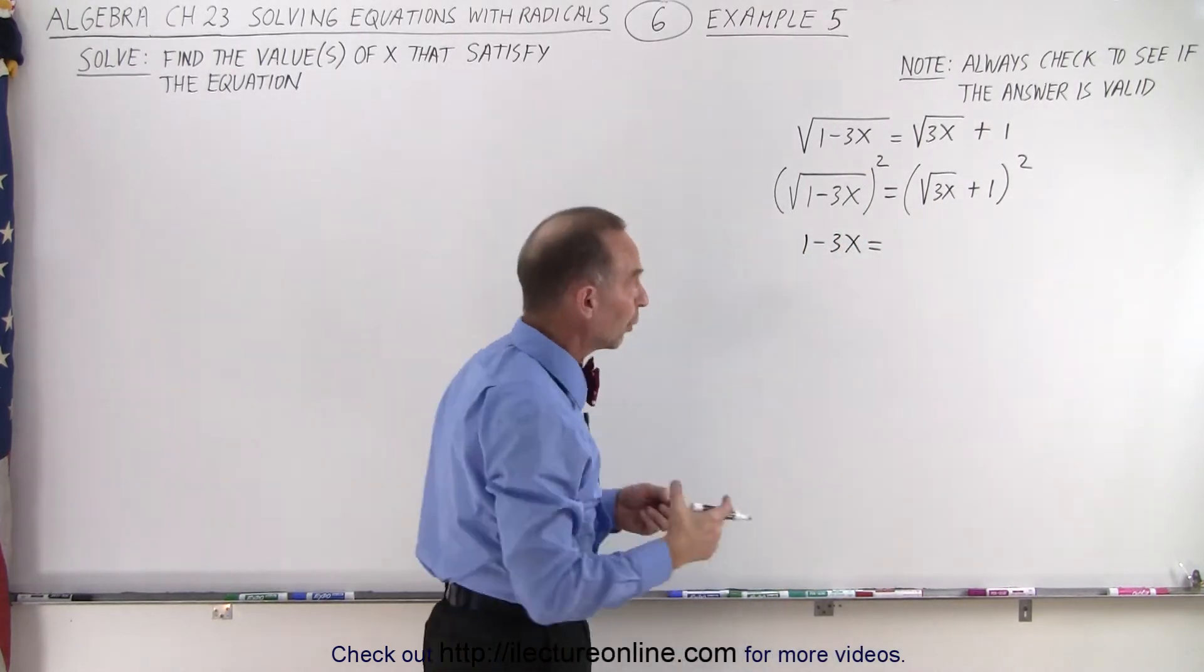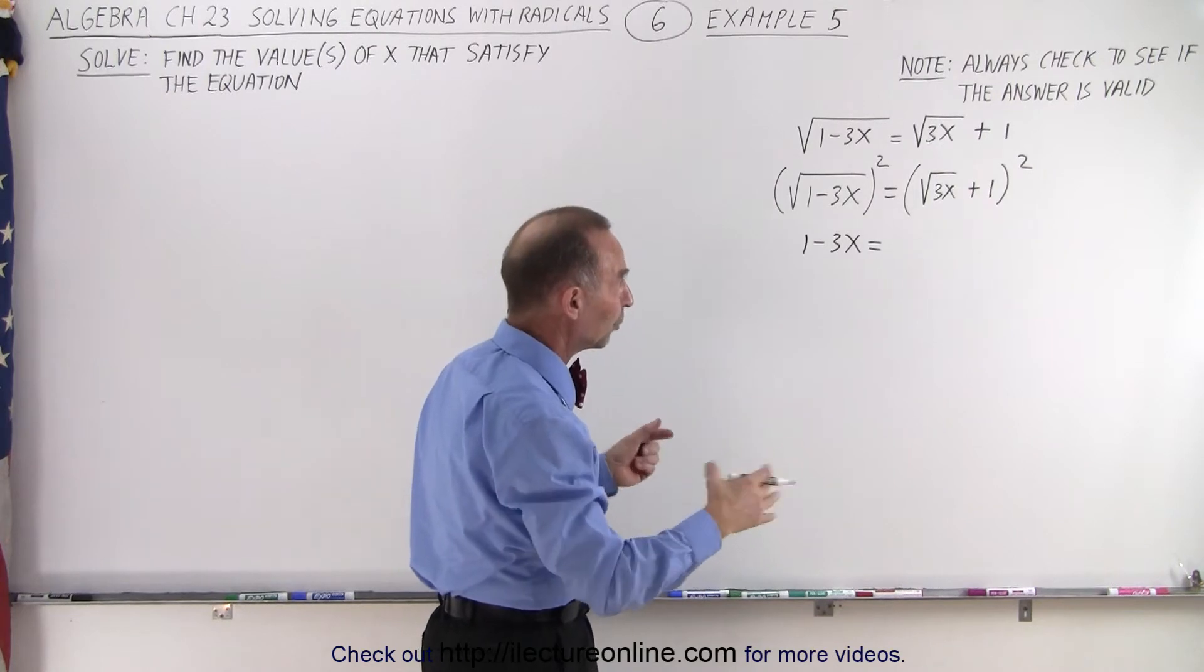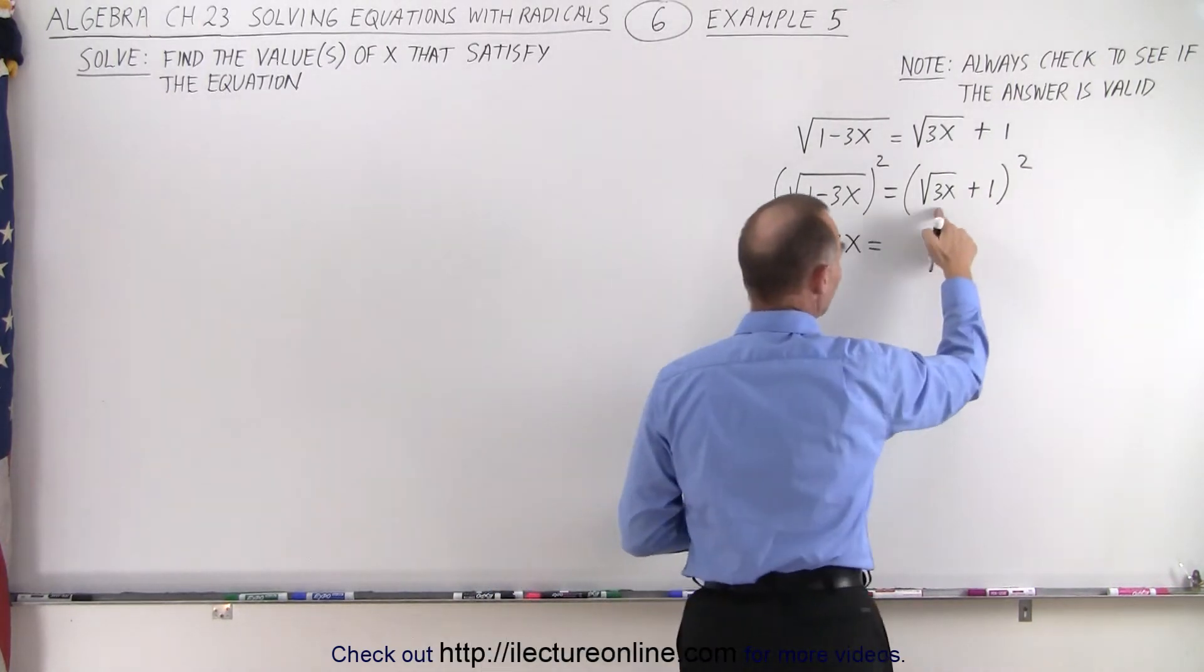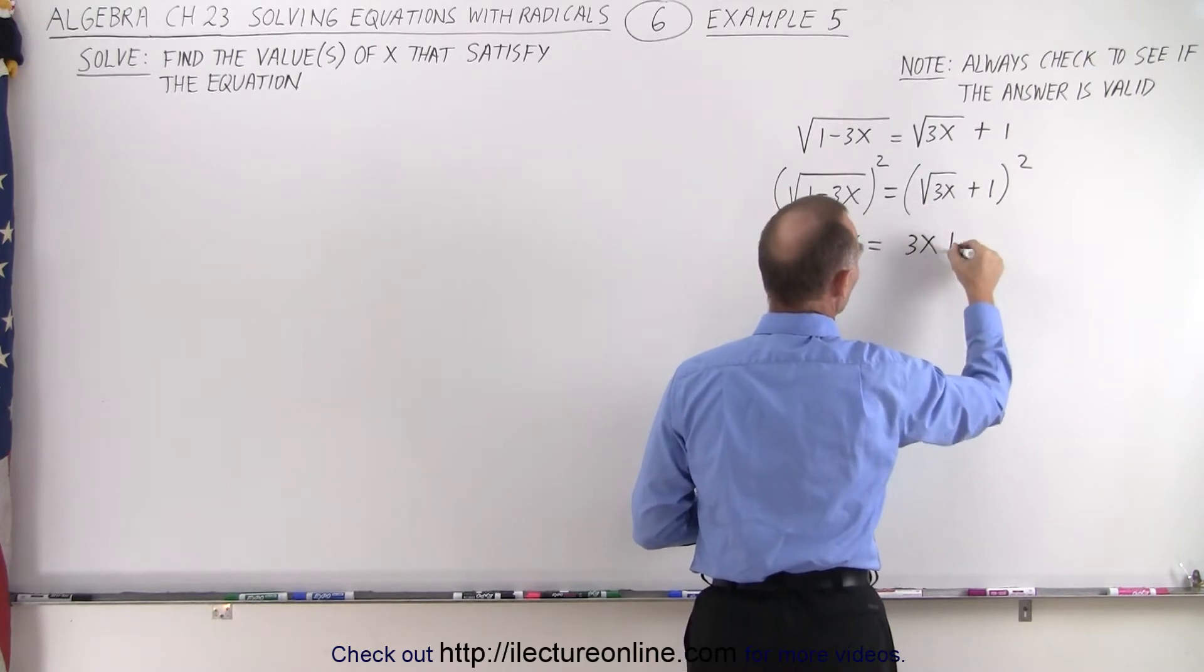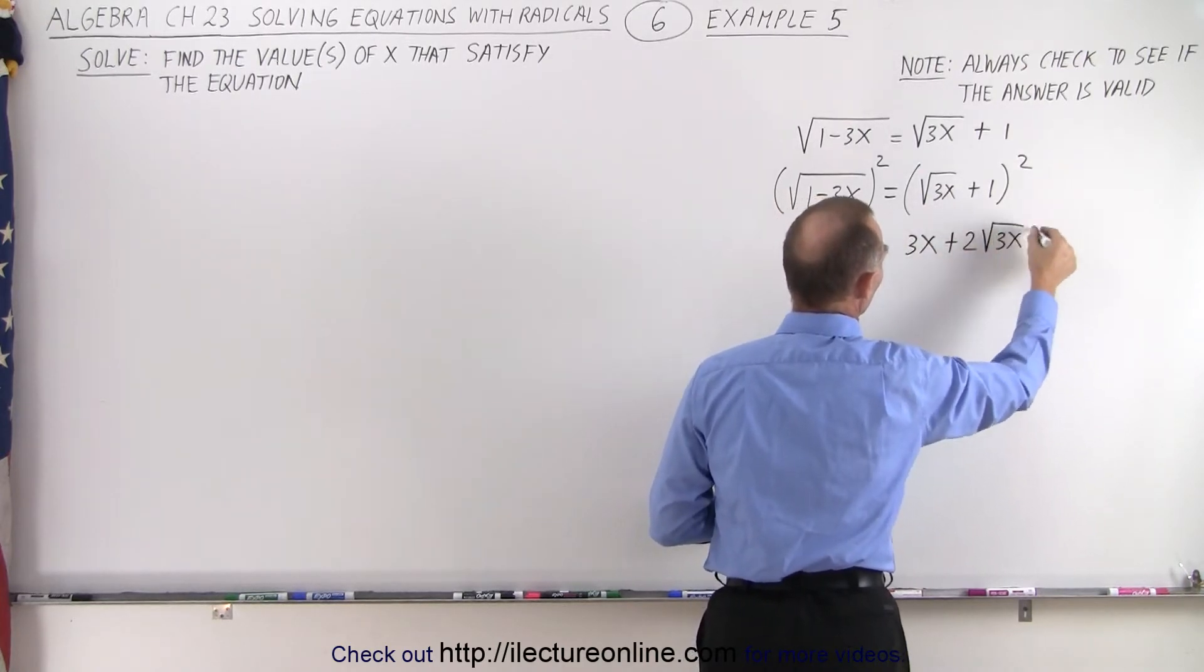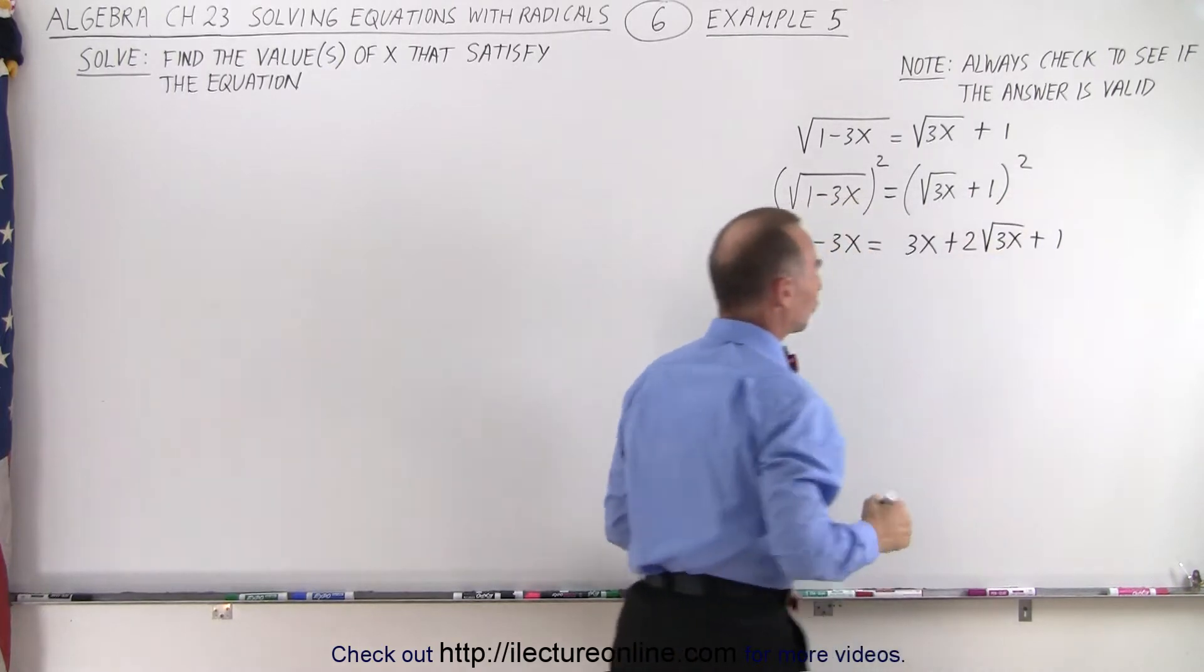On the right side, we need to use the binomial properties. When we have a binomial and we square it, that means we take the first term squared, which is 3x, twice the product of the two, which is plus 2 times the square root of 3x, plus the square of the last term.